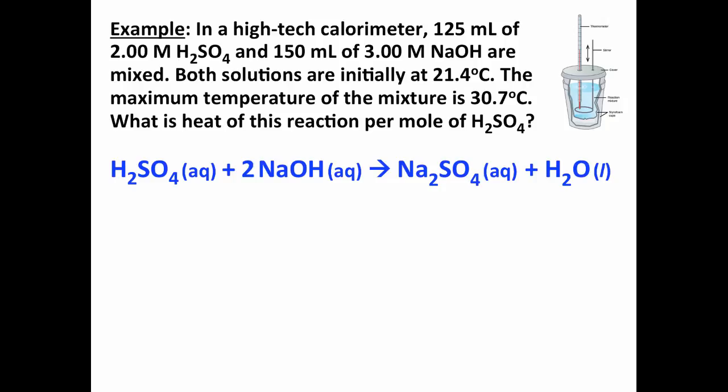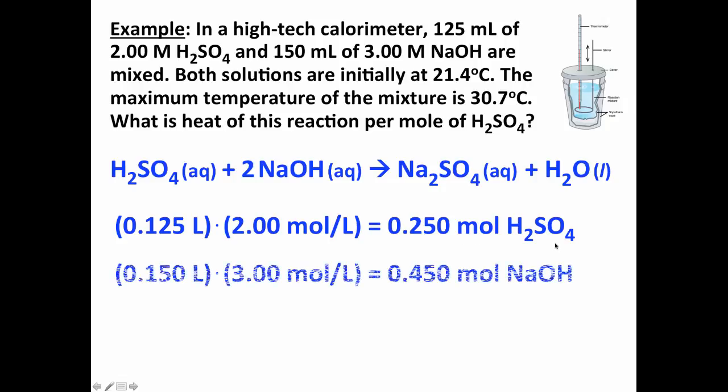So, the reaction that takes place, acid-base reaction between H2SO4 and NaOH, it has a two-to-one stoichiometry. We can determine the amount of sulfuric acid that we started with by doing the volume times the molarity, so liters times moles per liter gives us moles of sulfuric acid. We do the same thing, but using the values for sodium hydroxide, and that gives us 0.450 moles of NaOH as compared to the 0.250 moles of H2SO4.